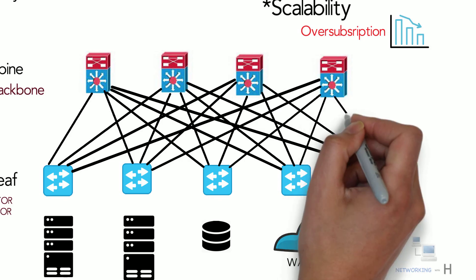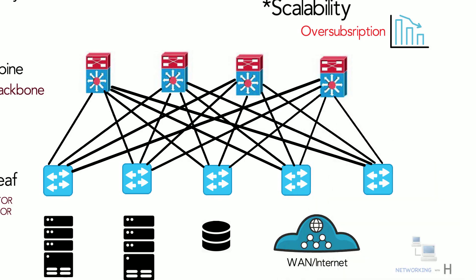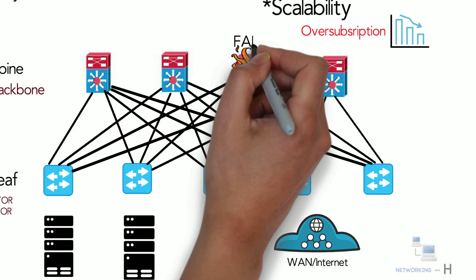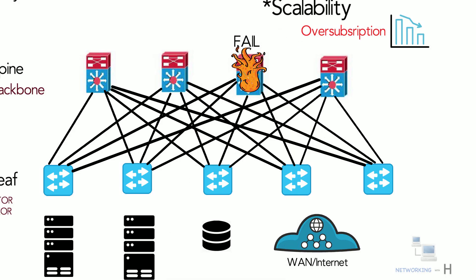The ease of expansion optimizes the IT department's process of scaling the network. If one of the top-tier switches were to fail, it would only slightly degrade performance throughout the data center.